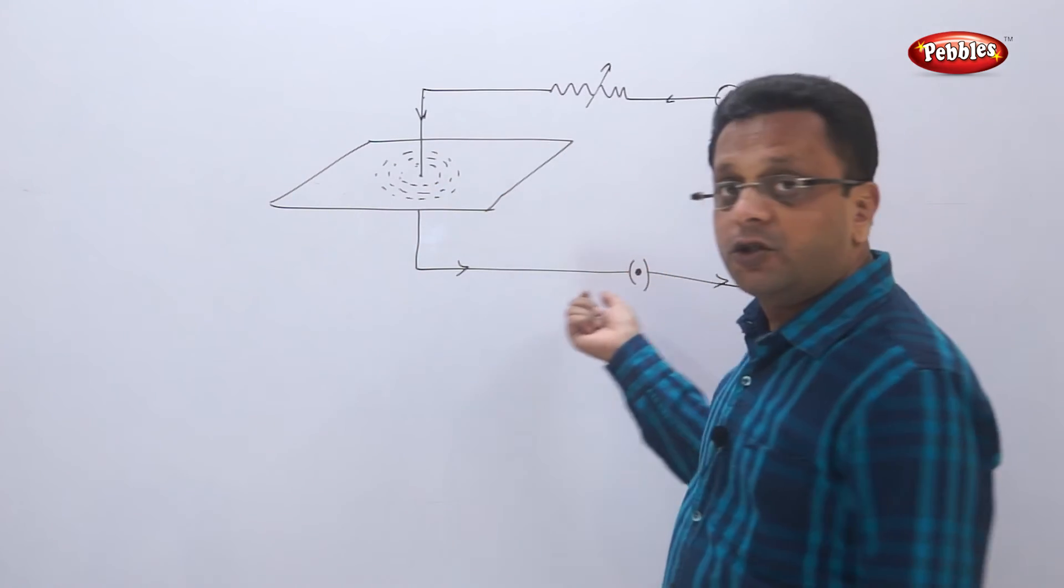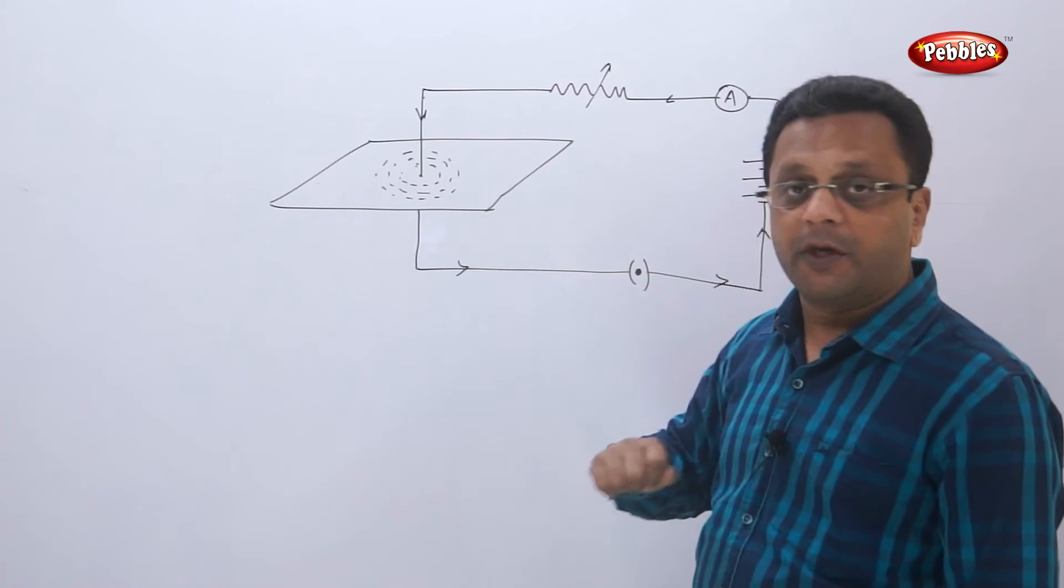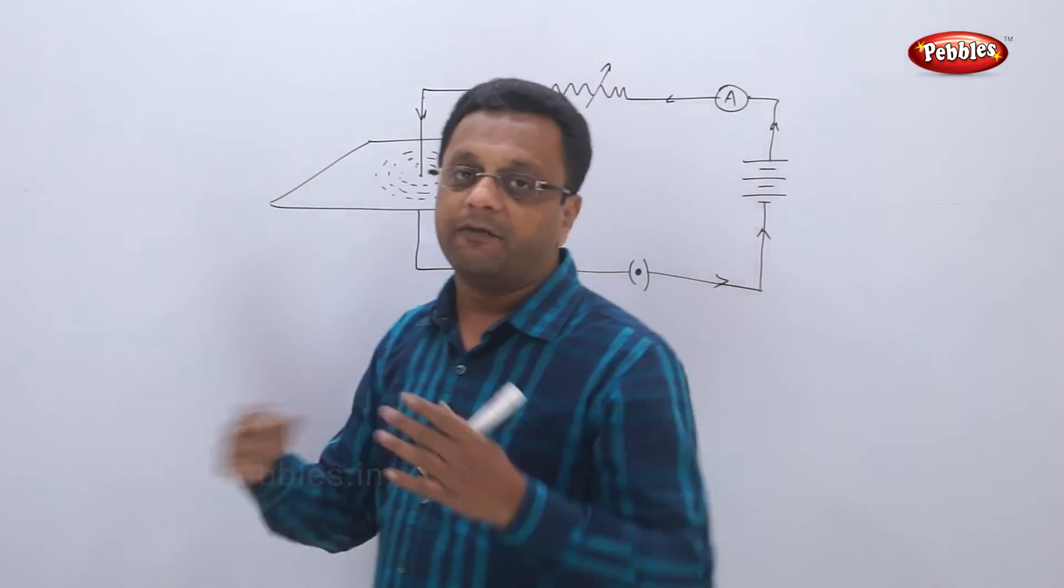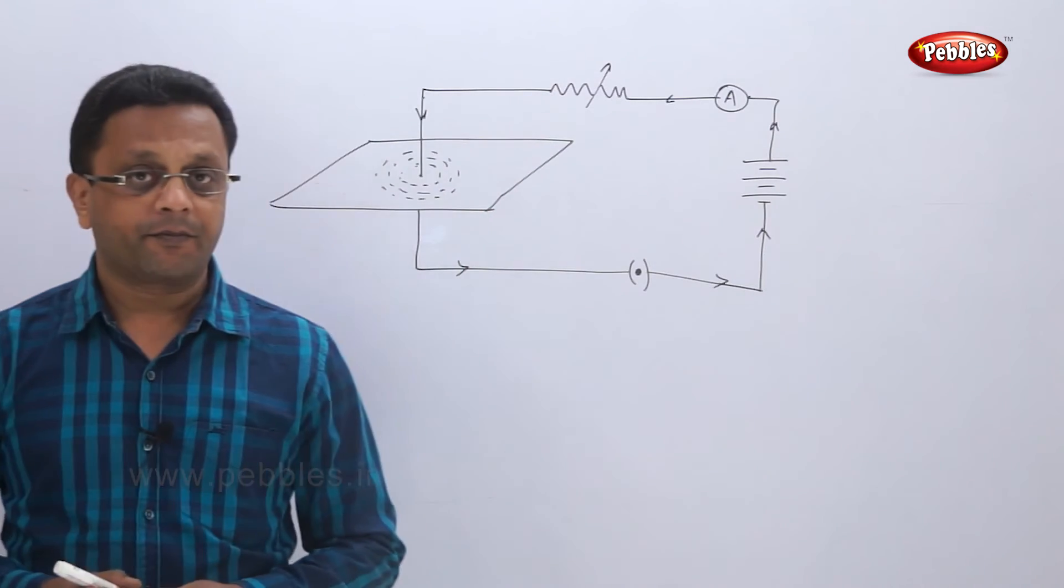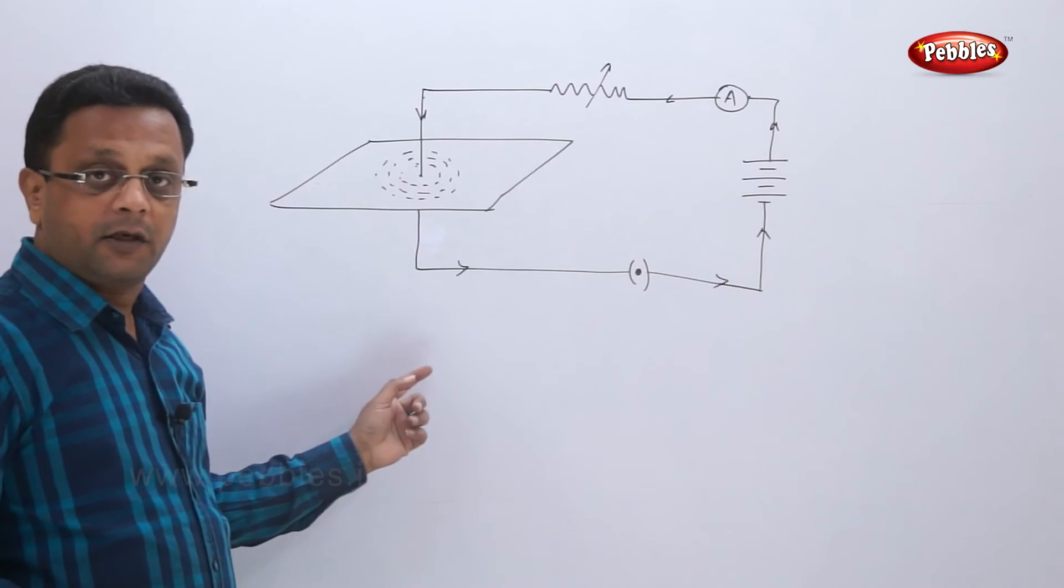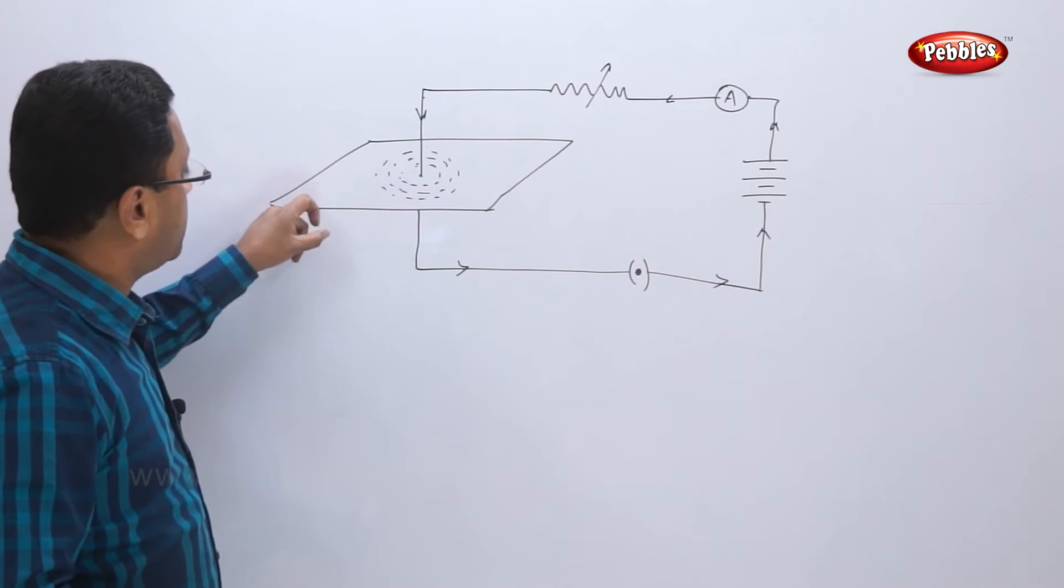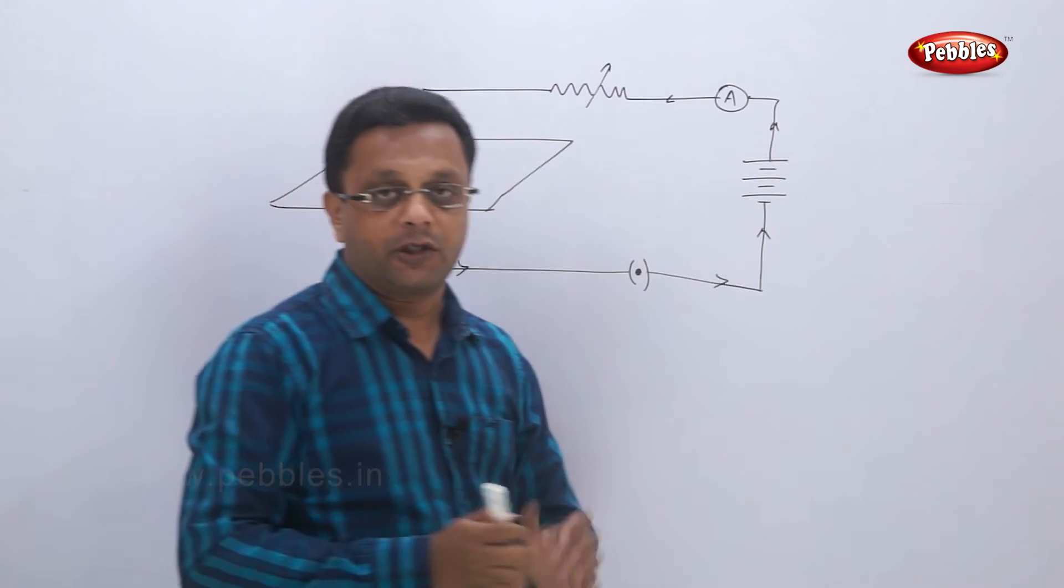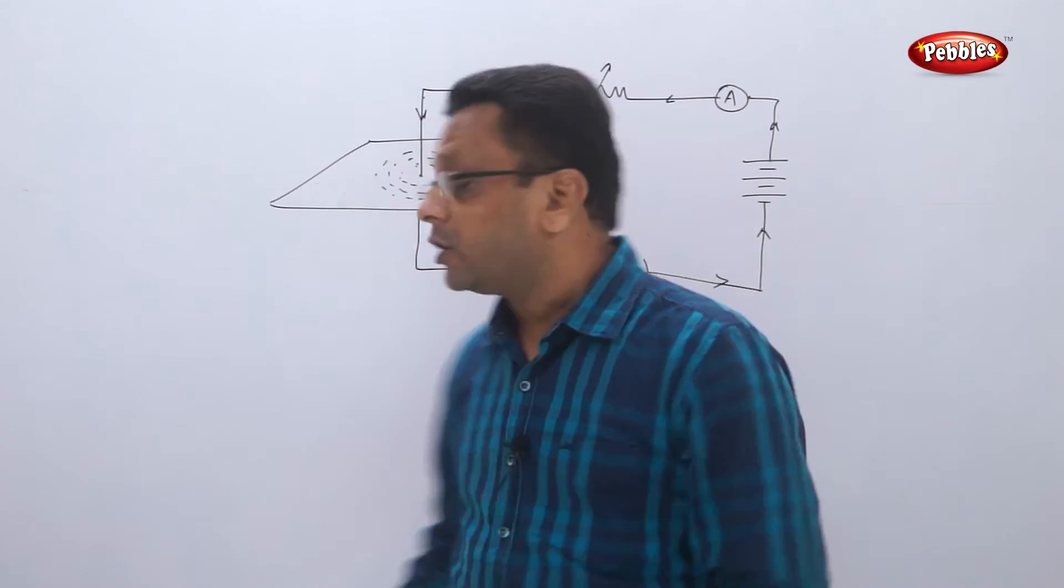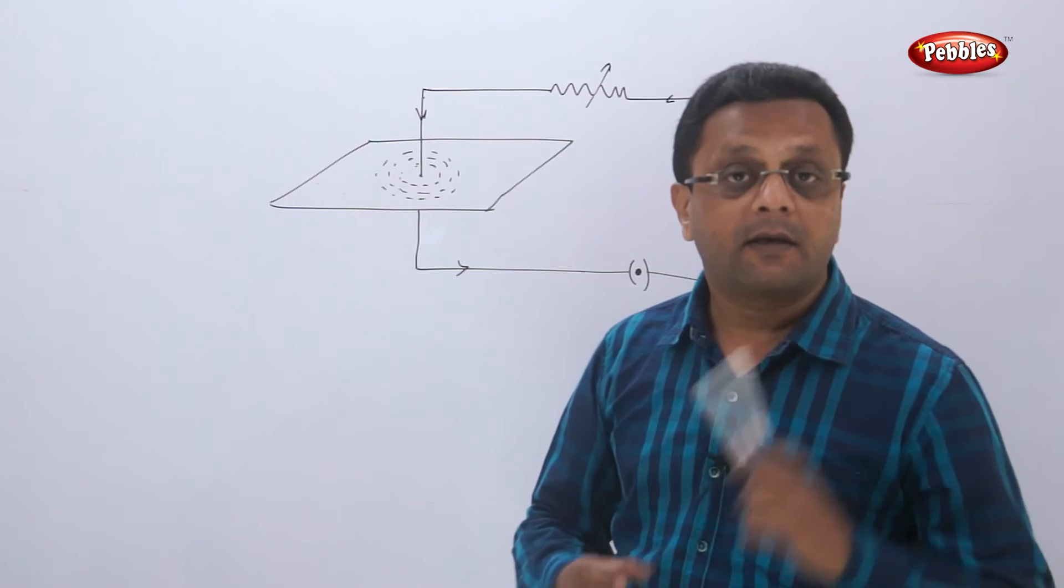When the current is closed, that means the circuit is open, and if you tap, they will get scattered. Again you close the circuit, let the current flow through the conductor, and again you tap, they will take a particular shape. That means magnetism is induced in this current carrying conductor.